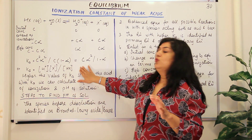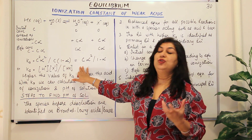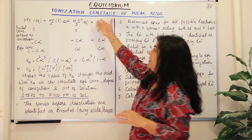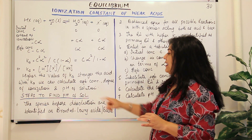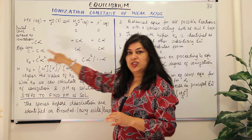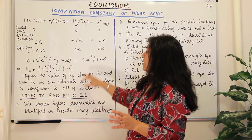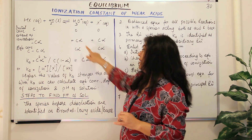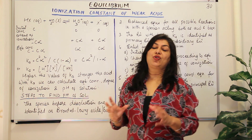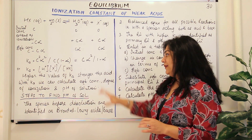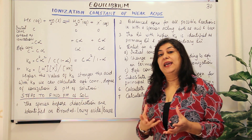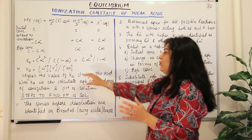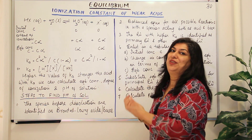Now, what do we do with this equilibrium constant Ka? With the help of Ka, we can: first, calculate the equilibrium concentrations; second, find out the degree of ionization; and third, calculate the pH of the final solution. These are the applications of finding out Ka, and vice versa — if you know these values, you can calculate Ka.